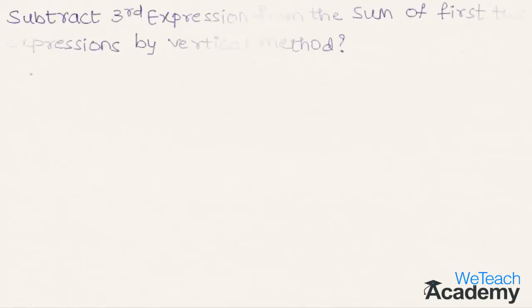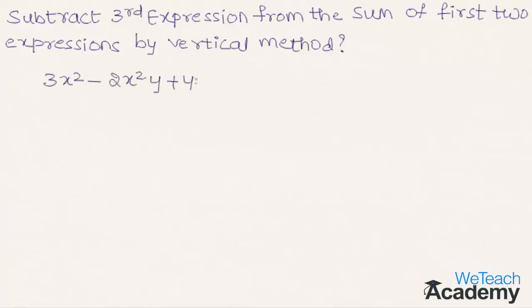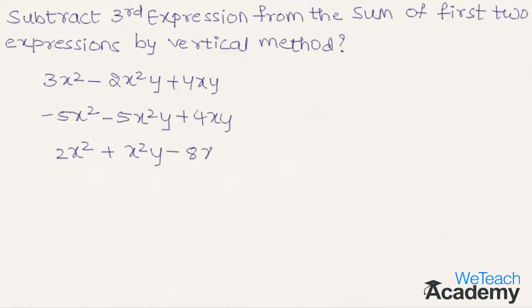Now let us solve another example: subtract the third expression from the sum of the first two expressions by the vertical method. The first expression is 3x² minus 2x²y plus 4xy. The second expression is minus 5x² minus 5x²y plus 4xy. The third expression is 2x² plus x²y minus 8xy. Let us name the first expression as a, the second as b, and the third as c. According to the problem, we need to compute a plus b minus c.